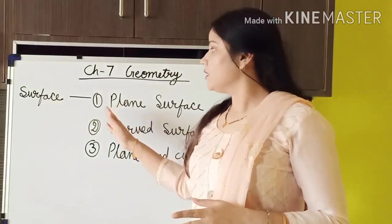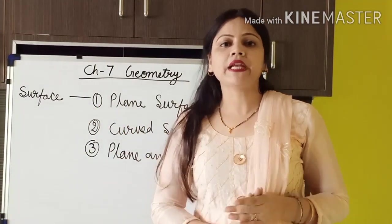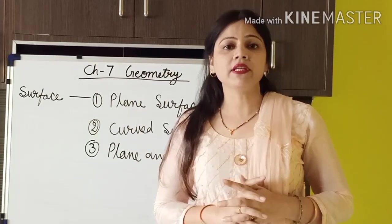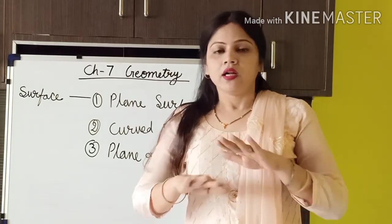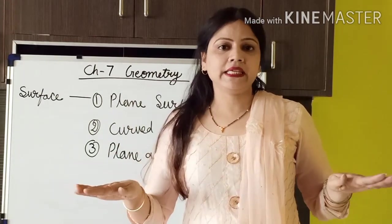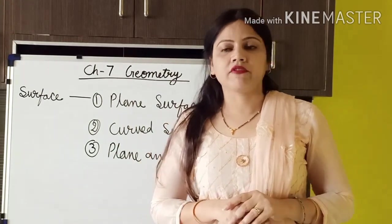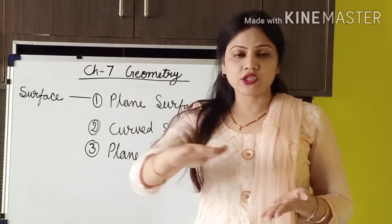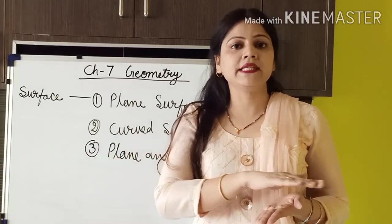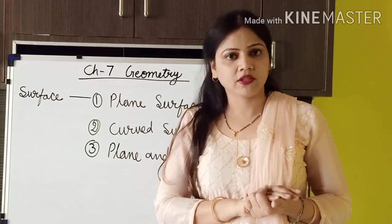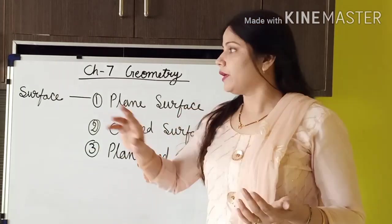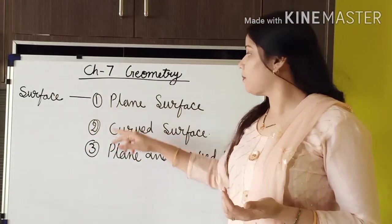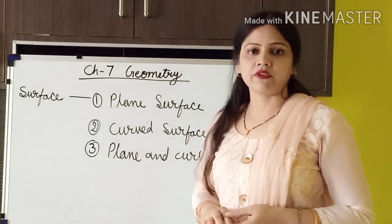In solid figures, we will learn about three different types of surfaces. What is surface? The top of anything is called the surface. Like if you have a dining table in your home, then the top of the dining table is the surface of that. So in the solid shapes, we will learn about three different types of surfaces.